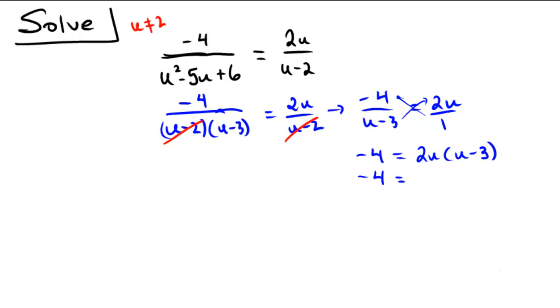So negative 4 equals 2u squared minus 6u. Add 4 to both sides so that 0 equals 2u squared minus 6u plus 4. And then since all these numbers are even, I'm also going to divide by 2 to say that 0 equals u squared minus 3u plus 2. Awesome. 0 equals u squared minus 3u plus 2.